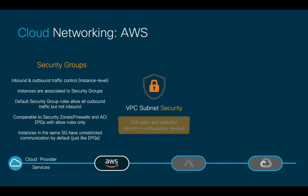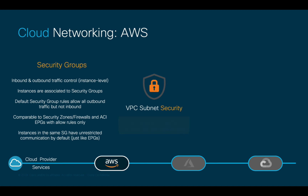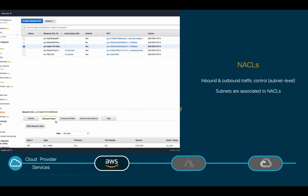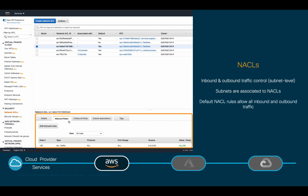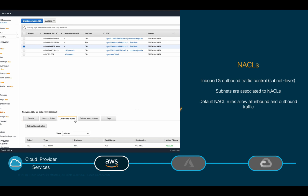All security group rules are stateful, meaning that you do not need to create any mirror rules. In the case of AWS, there's another option that can be used to control traffic at the subnet level, which is called NACLs or Network Access Control Lists. All subnets are associated to a default NACL, which rules are set to permit all traffic both inbound and outbound. Therefore, unlike security groups, you do not need to customize or adjust NACLs if you do not want to.